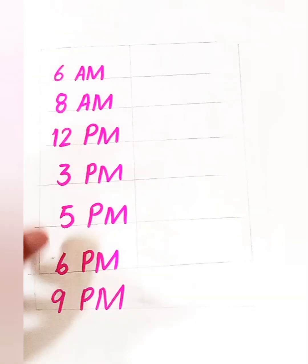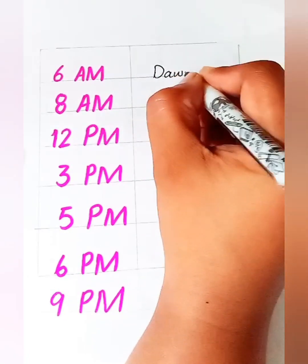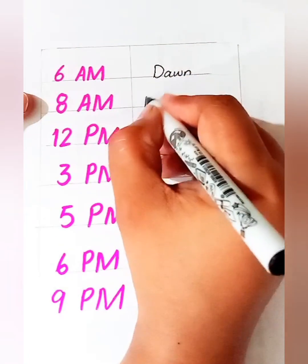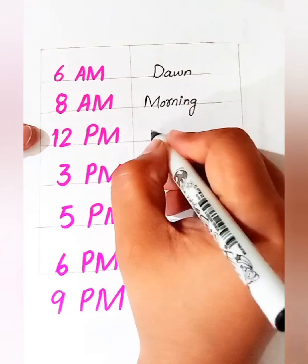Can you name this period of time in English? 6 AM, dawn. 8 AM, morning. 12 PM, noon.